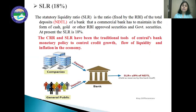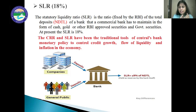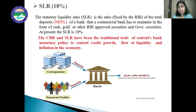The next tool is the SLR, that is the Statutory Liquidity Ratio. SLR is the ratio of the total deposits (NDTL) of a bank that a commercial bank has to maintain in the form of cash, gold, and other RBI-approved securities and government securities. In the case of CRR, only cash has to be kept aside; in the case of SLR, along with cash, the bank must also keep gold and RBI-approved government securities. At present, the SLR is 18%.